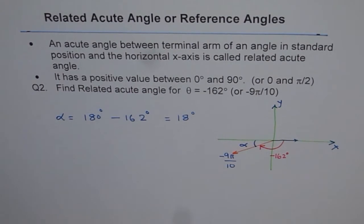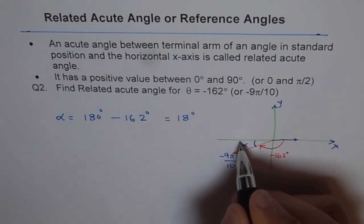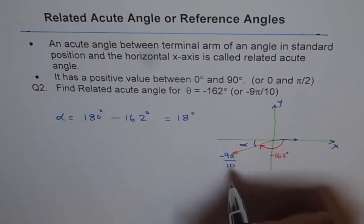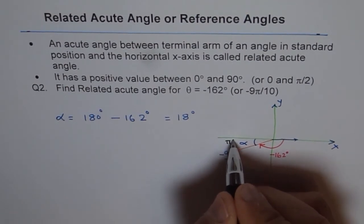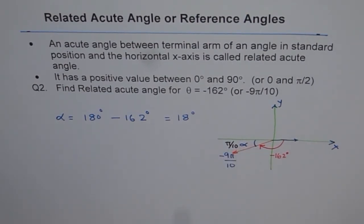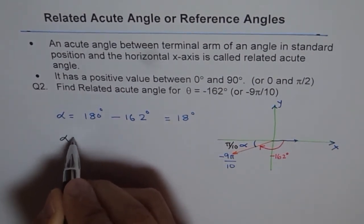So what is left for you is the angle between horizontal and the terminal arm, and that is π/10. Do you see that? So you can get your answer π/10 quickly, or you can do the same way.